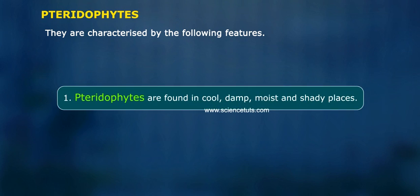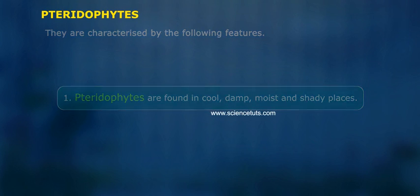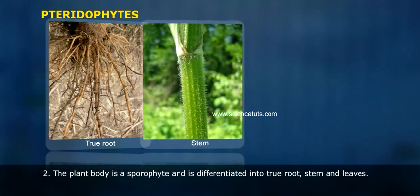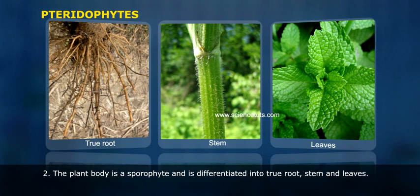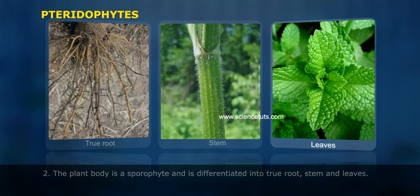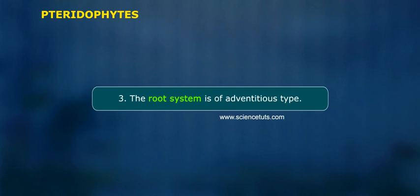Pteridophytes are characterized by the following features. One, pteridophytes are found in cool, damp, moist and shady places. Two, the plant body is a sporophyte and is differentiated into true root, stem and leaves. Three, the root system is of adventitious type.